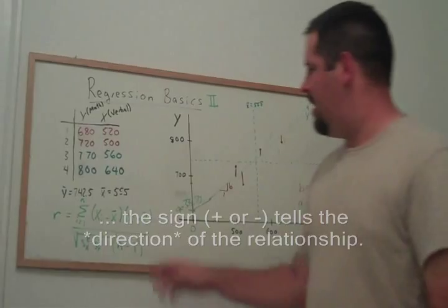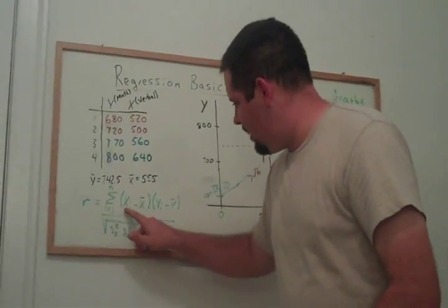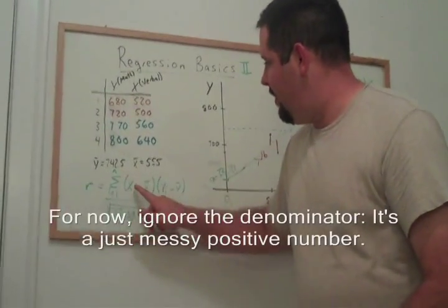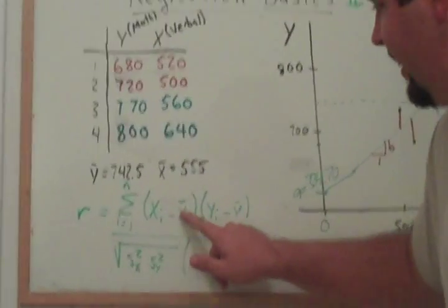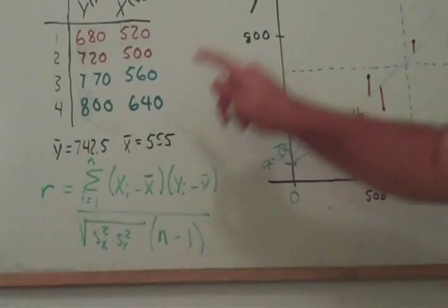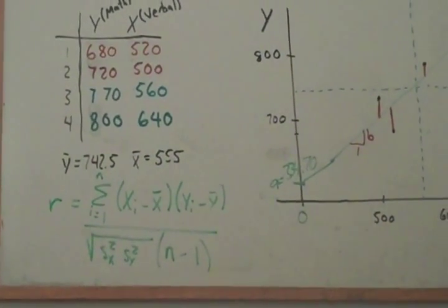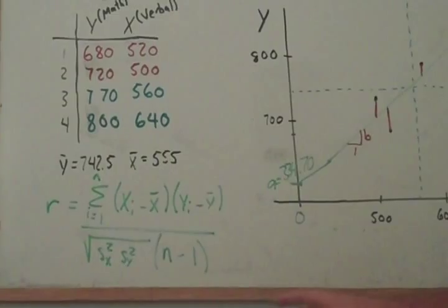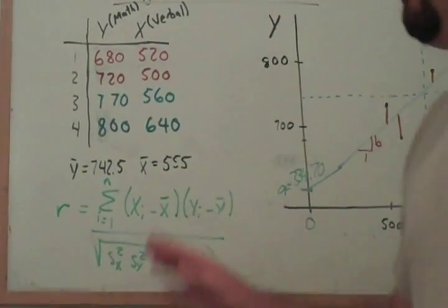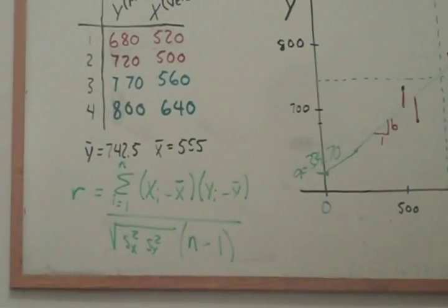The first thing to notice is that we're taking the difference between the explanatory variable and its mean, and we're multiplying that by the difference between the response variable and its mean. So we want to think about when we're going to get positive contributions to this sum, and when we're going to get negative contributions.